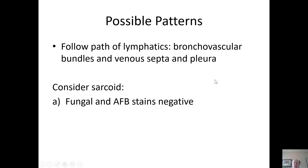There are several possible patterns. Granulomata can follow the path of the lymphatics, which are present in the bronchovascular bundles, the venous septa, and the pleura. If you find this pattern, consider sarcoid. But one must also always do fungal and acid-fast stains prior to making a diagnosis of sarcoid.